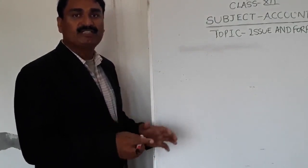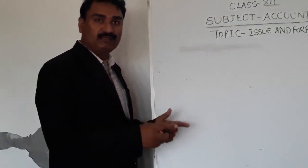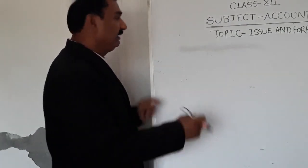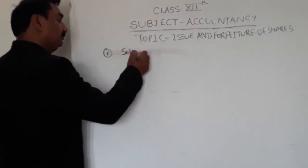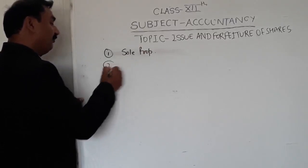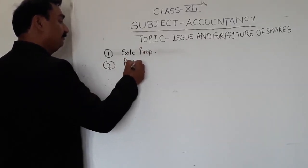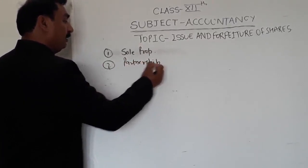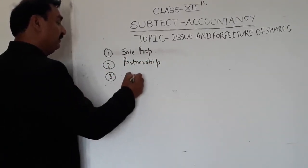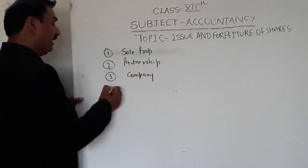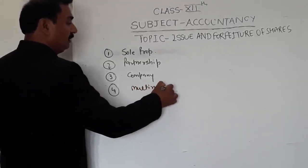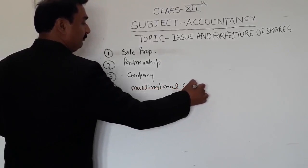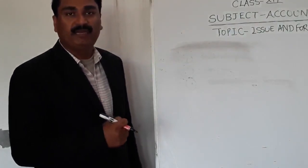Before describing the chapter on company, I have to start about the forms of organizations. There are different forms of organization: sole proprietorship, partnership, company, and the larger form of business organization is multinational company. These are the forms of business organization.